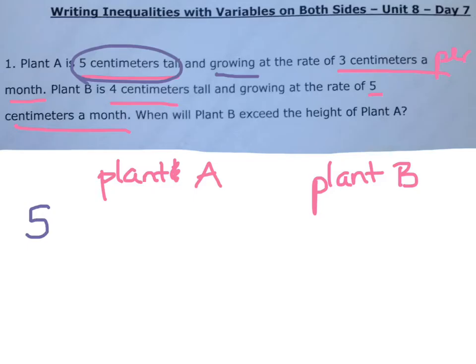It's growing, which means it's going to be increasing, not decreasing. If it was depleting or going down, that would be decreasing minus. But this is growing three each month. Now plant B is four centimeters tall. That's the height that it is right now.